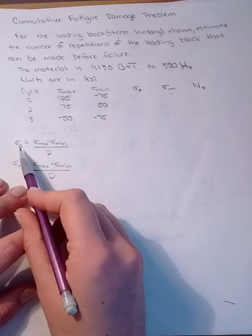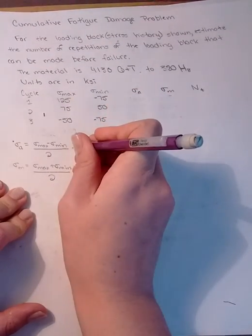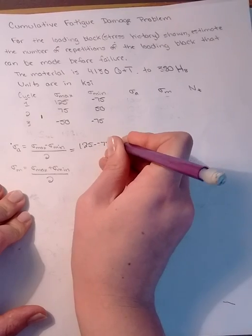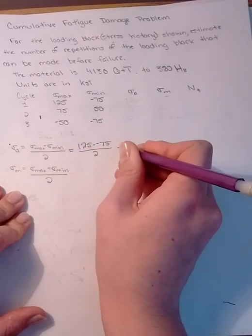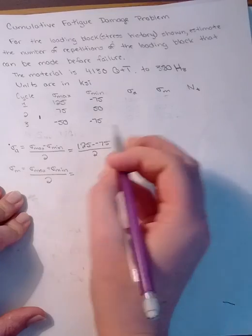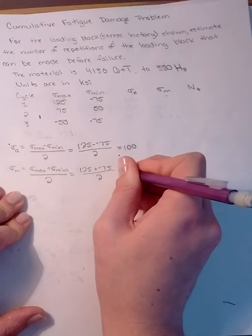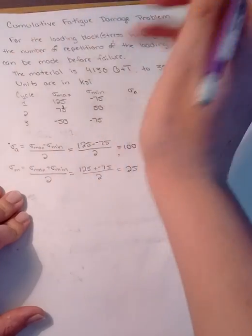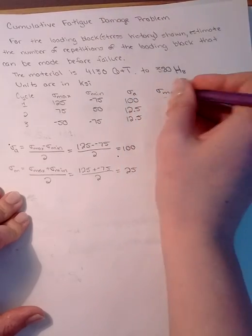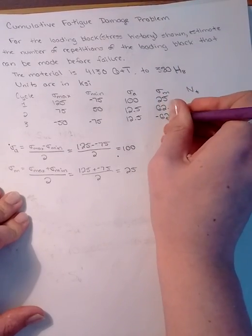To solve for sigma_a: sigma_a equals sigma max minus sigma min over 2, giving 125 minus negative 75 divided by 2, which equals 100. Then sigma_m equals sigma max plus sigma min divided by 2, so 125 plus negative 75 divided by 2, which equals 25. Doing that process for all other cycles gives sigma_a and sigma_m values of 100, 12.5; 12.5, 25; 62.5, and negative 62.5.